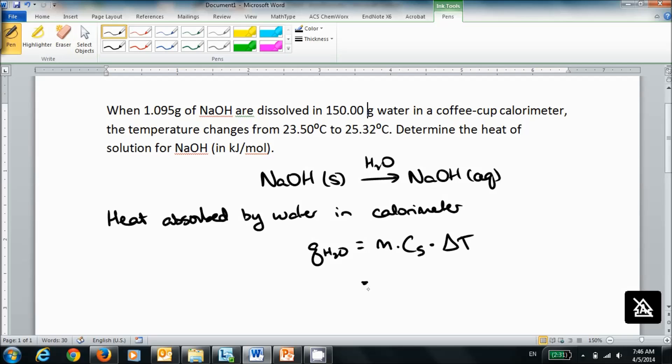Mass here is going to be the mass of the water. You look at the heat being absorbed, you're not looking at the amount of reactant yet. So that's 150.00 grams for water. The specific heat is 4.184 joules per gram per degree Celsius.